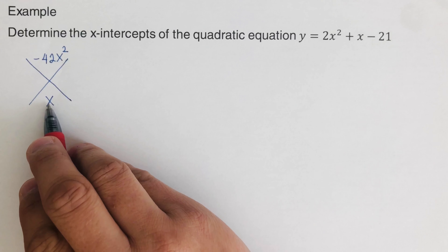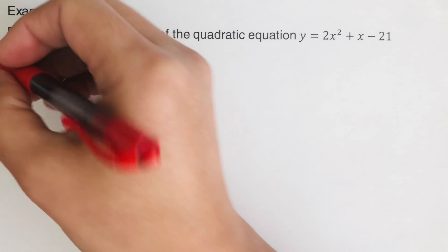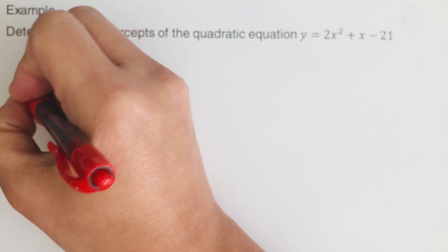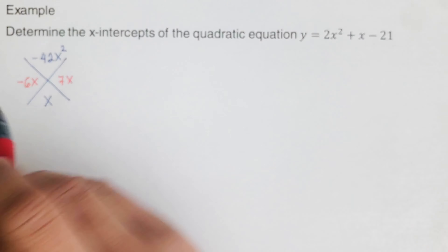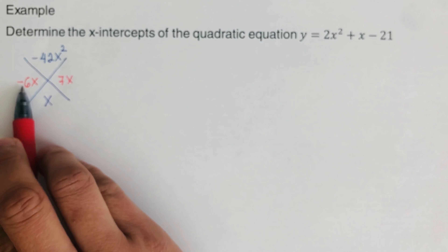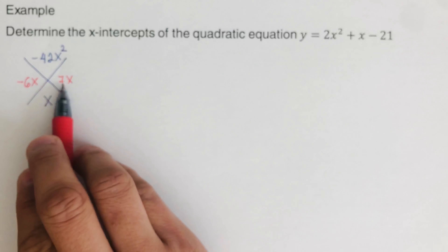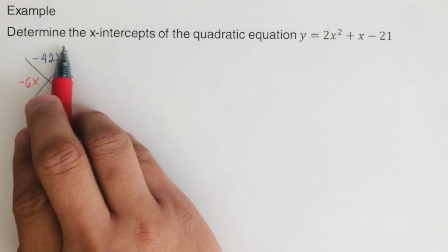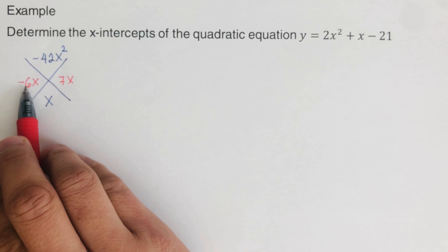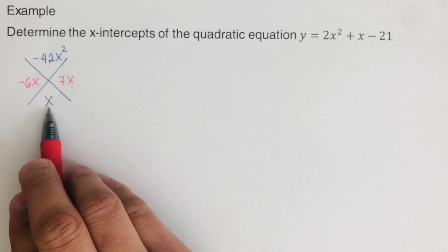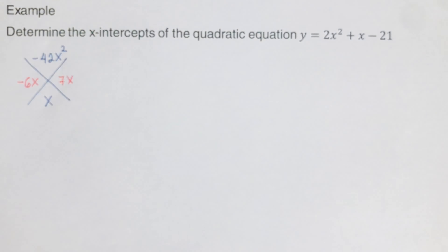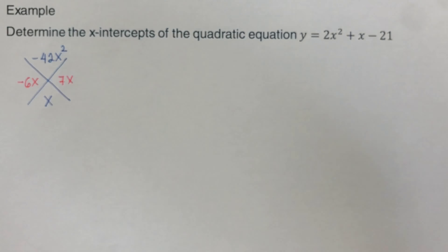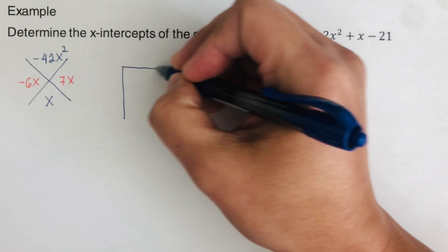We need to find factors of negative 42x squared that sum to positive x. Those are negative 6x and 7x, because negative 6x times 7x equals negative 42x squared, and negative 6x plus 7x equals positive x. We can now go ahead and draw the box.